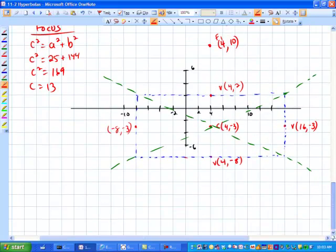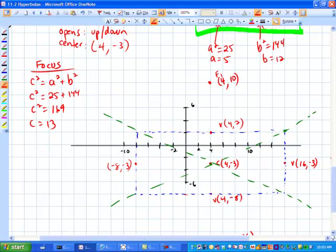And then in the other direction, it's going to be 4, let's see, I've got to add 13 to that. That'll be at a negative 16. So those are my focus points.